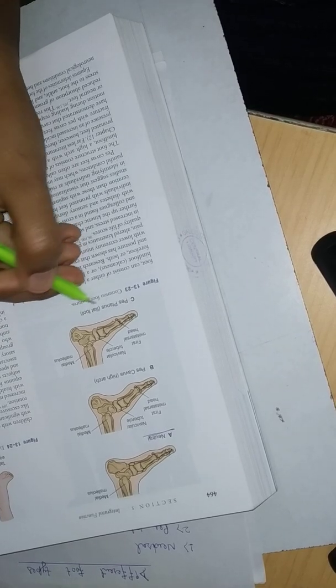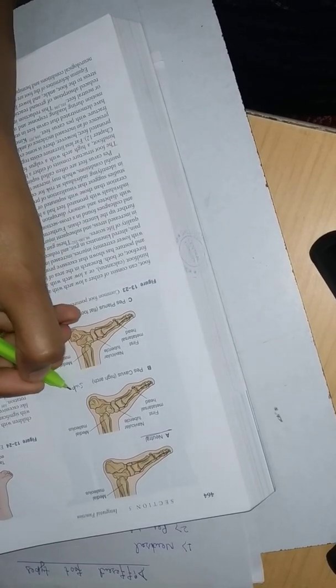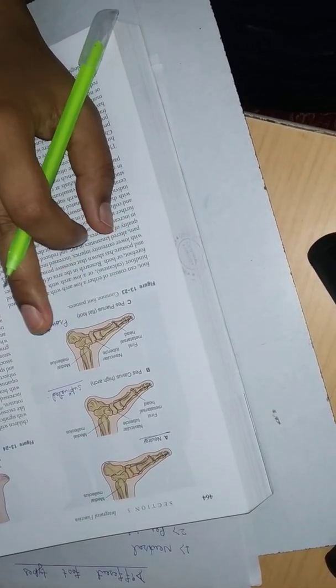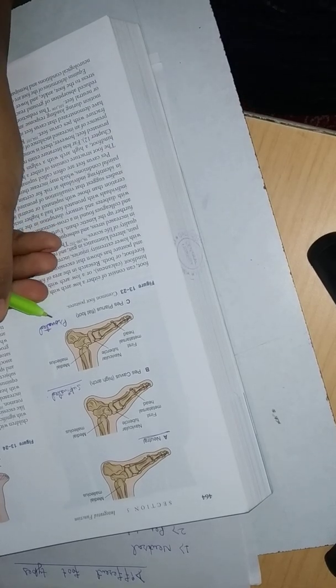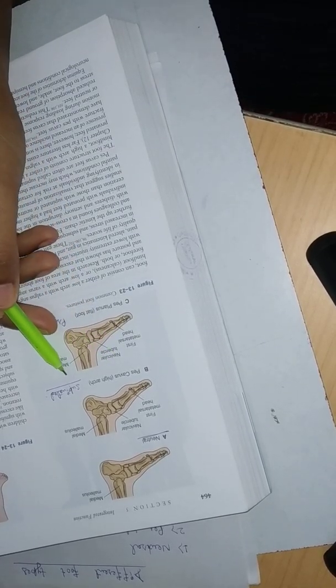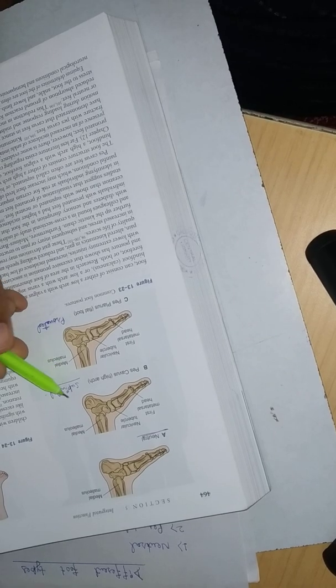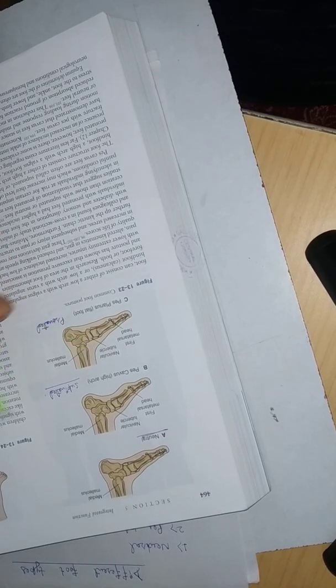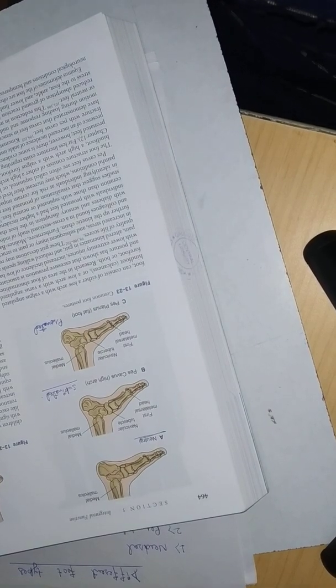And Pes Cavus is supinated foot because in supination we touch the floor more on the lateral side, so that's why the medial side is like a cave in supination. That's why it is supinated foot and pronated foot. This was the diagrammatic explanation. Thanks for you guys, please like, share and subscribe my channel. Thanks for watching my videos.